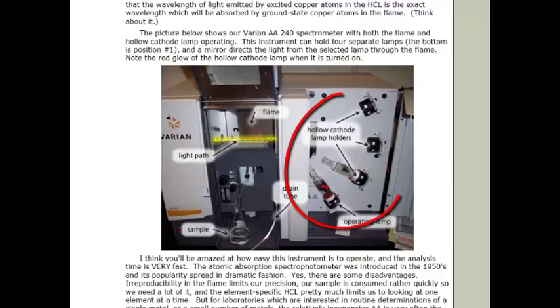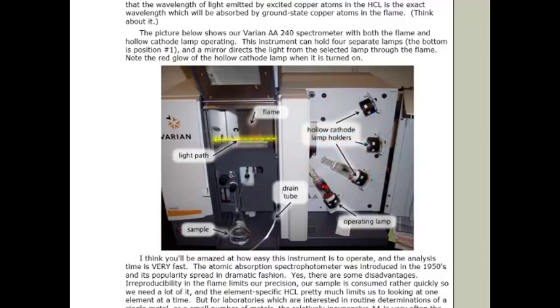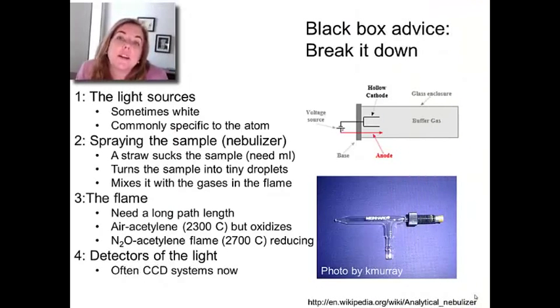Over on the right you can see the cathode lamps, and you can switch between them. Each lamp is designed for a particular element. The reason they shine at a certain wavelength is because that element is inside it. For example, this copper lamp is emitting the wavelengths that copper atoms absorb. You can only use one HCL lamp at a time. When you buy an atomic absorption spectrometer, you outfit it with a series of lamps that define what elements you can measure. The other drag is the sample—you need a lot of volume. It's a very noisy instrument, and you sometimes have to average and take the sample through the flame for a while. It's not just like taking a picture.